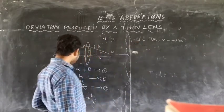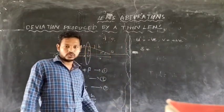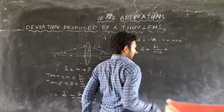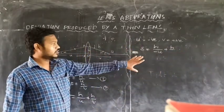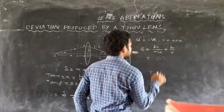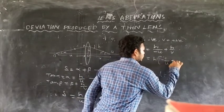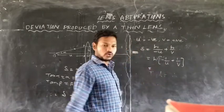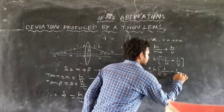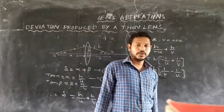Applying sign convention to the equation delta = H/U + H/V: since U is negative, we replace U with −U. So delta = H/(−U) + H/V = H(−1/U + 1/V). Taking H as common, delta = H(1/V − 1/U).